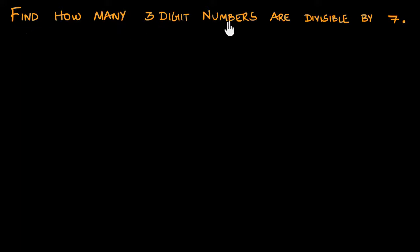Find how many three-digit numbers are divisible by seven. What seems relevant to me here is the fact that they need to be three-digit numbers and the fact that they have to be divisible by seven.